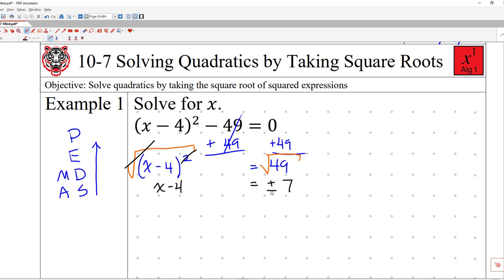Whenever I take the square root, you always have to do plus or minus. And then my final step is just to add 4 to both sides. Plus 4, plus 4, and therefore those are gone. x is now equal to—you can say this one of two ways. You can either say plus or minus 7 plus 4, which is fine. That's the same thing as 4 plus or minus 7.